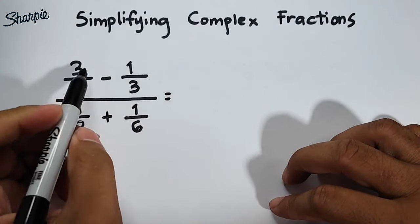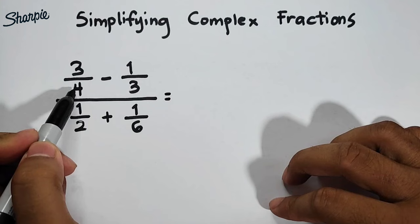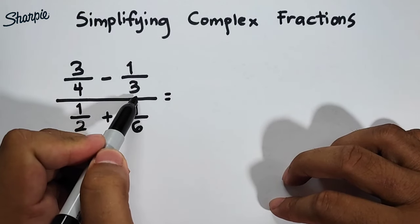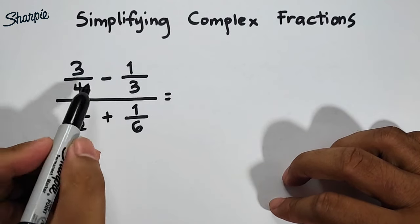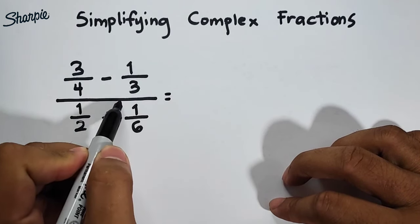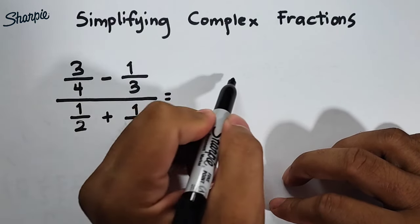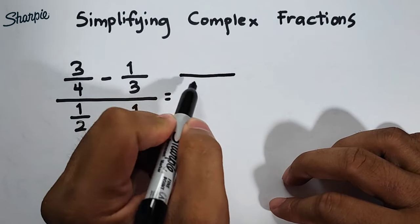So as you can see, in our numerator we have 3 over 4 minus 1 over 3. This is a subtraction. So in the conventional way, we need to find the LCD of 4 and 3. And the LCD is 12.